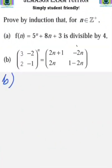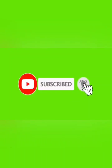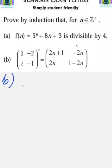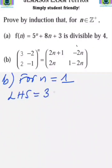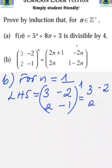In part (b) we are asked to prove that the matrix [3, -2; 2, -1] to the power n equals [2n+1, -2n; 2n, 1-2n]. Again we start with the base case, which is n equals 1 since we are dealing with the set of positive integers. For n equals 1, the left hand side is [3, -2; 2, -1] raised to the power 1, which gives [3, -2; 2, -1].